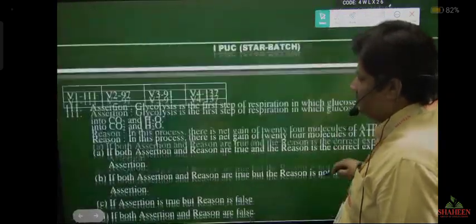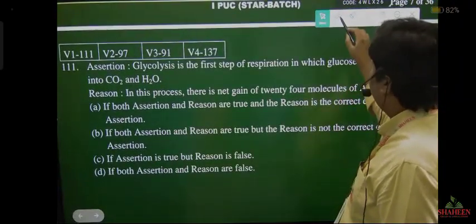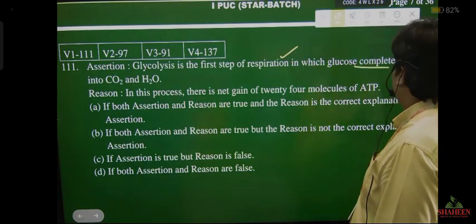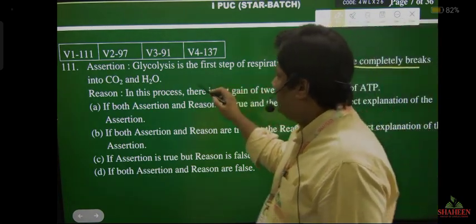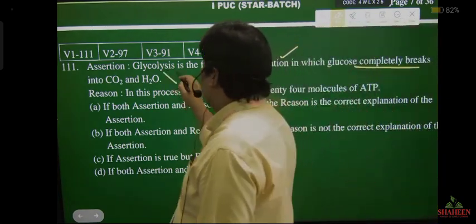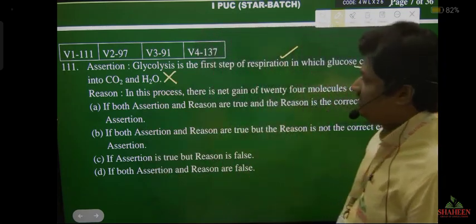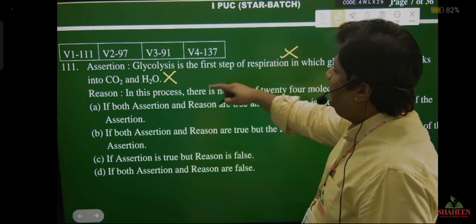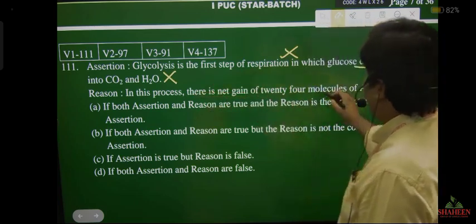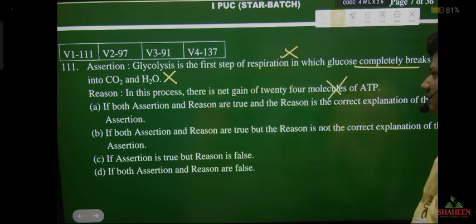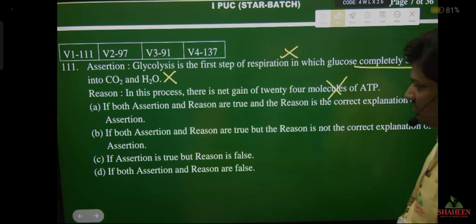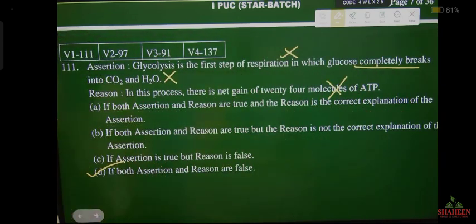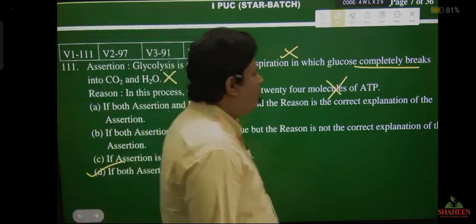Assertion-reason question: glycolysis is the first step of respiration — absolutely right. In which glucose completely breaks into carbon dioxide and water — absolutely wrong, glycolysis does not produce carbon dioxide or water. Also, in this process there is a net gain of 24 molecules of ATP — wrong, glycolysis does not produce 24 ATP. So correct answer is: both assertion and reason are false.